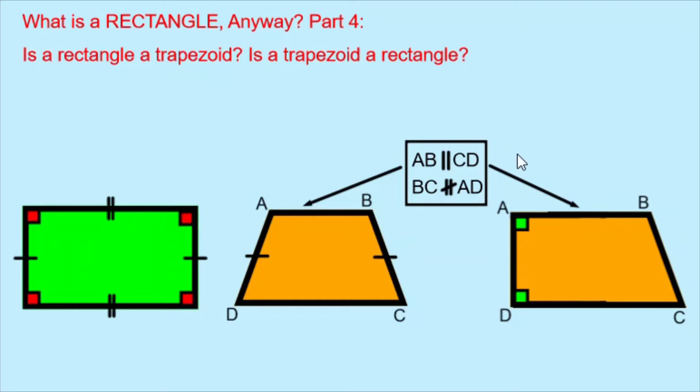Furthermore, there's notes here that show that in both trapezoids, side AB is parallel to side CD, and side BC is not parallel to side AD. This information becomes necessary once we look at the definitions of a trapezoid and a rectangle.